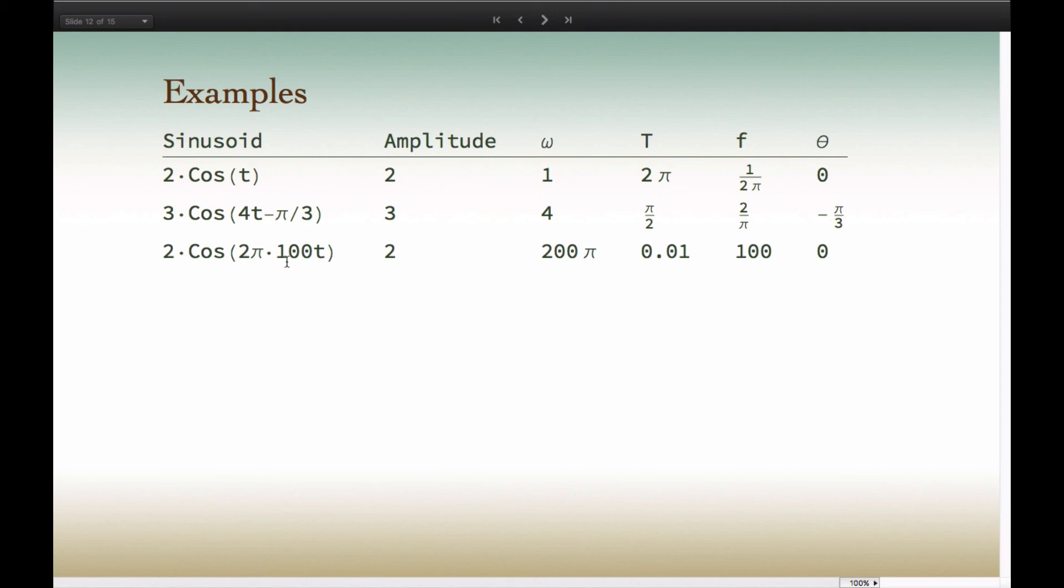This final example is important as we notice how omega is written. We have it written out as 2π times 100. So omega is 200π. But we can look at it, and by writing omega this way, we can see by inspection what F is. F, for this sinusoid, is 100 hertz. And the period, being the reciprocal of that, is 0.01 or 10 milliseconds.